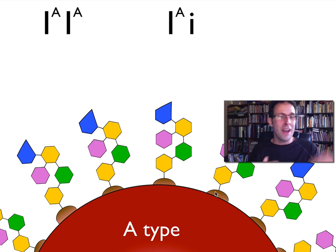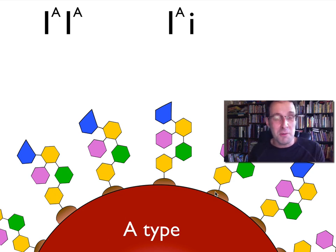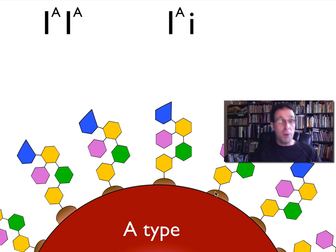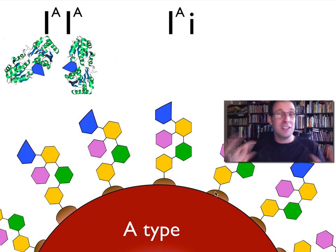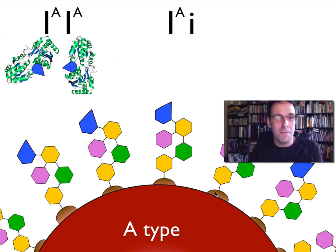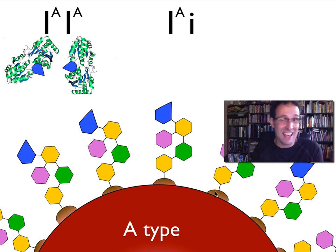Now, because you get one allele from each parent — an allele from your mom and an allele from your dad — if you get the Big I-A allele from both parents, then both of those alleles are perfectly functional. They'll both produce that enzyme which converts the H-antigen into the A-antigen.